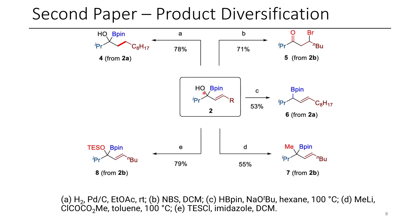Once they make this product, they're able to do several different types of chemistry. Here you can see the alkene is selectively reduced. Alternatively, a beta-bromination is done, also converting this back to a ketone. Here you can see the hydroxy group has been reduced under mild conditions. Additionally, they can protect it, and they can also substitute the alcohol with a methyl group using methyl chloroformate in the presence of methyl lithium, which is kind of a cool reaction.